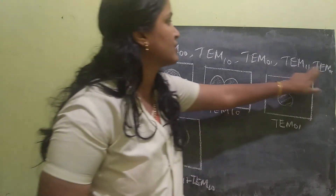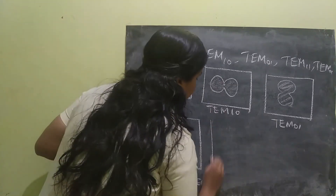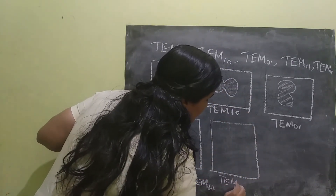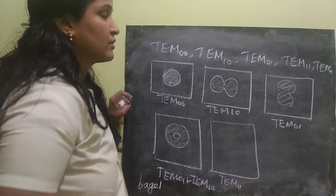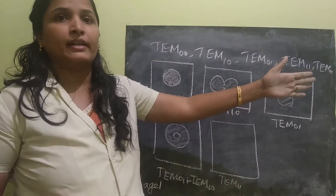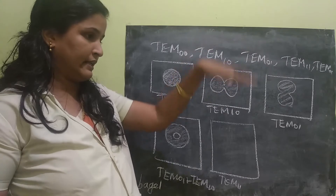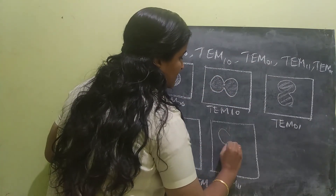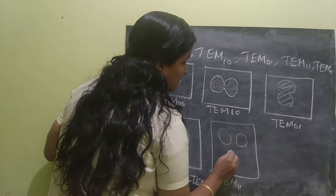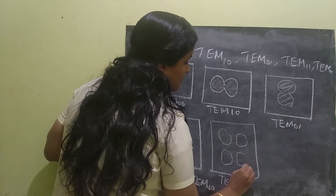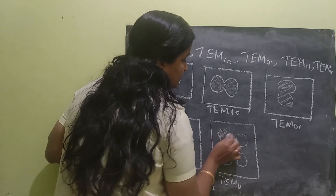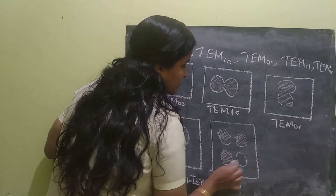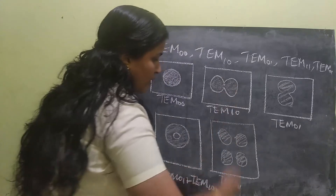Let's try TEM11. How will it be? If I move horizontally I'll have one cut, and if I move vertically I'll also have one cut. So the pattern will be four lobes arranged in a grid. Just shade these diagrams — one cut each direction.